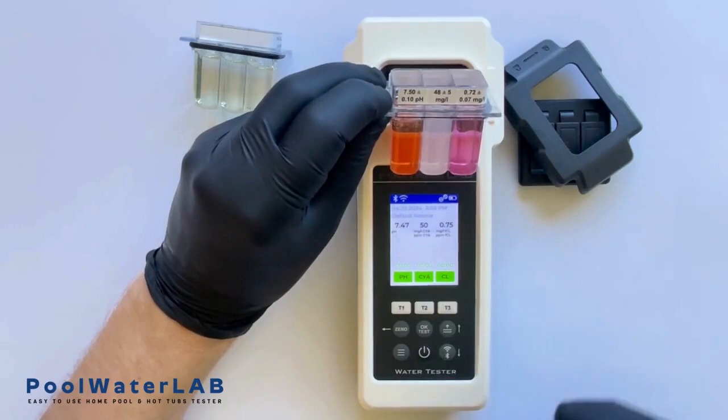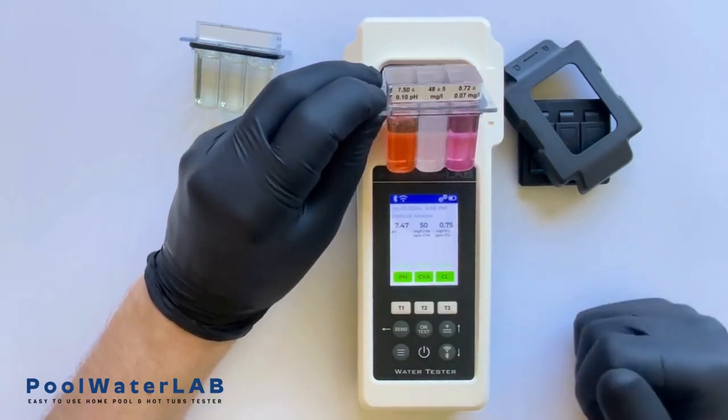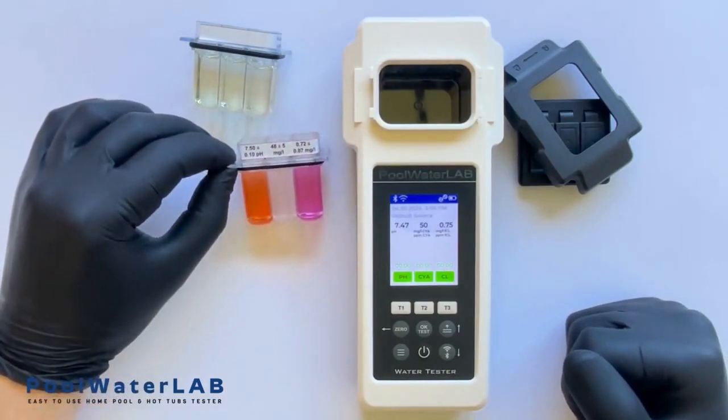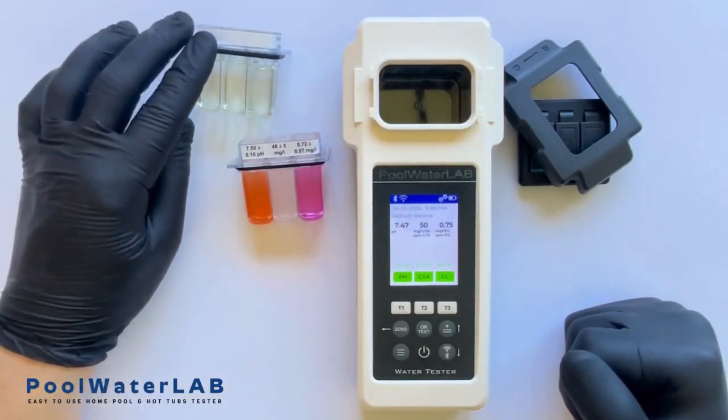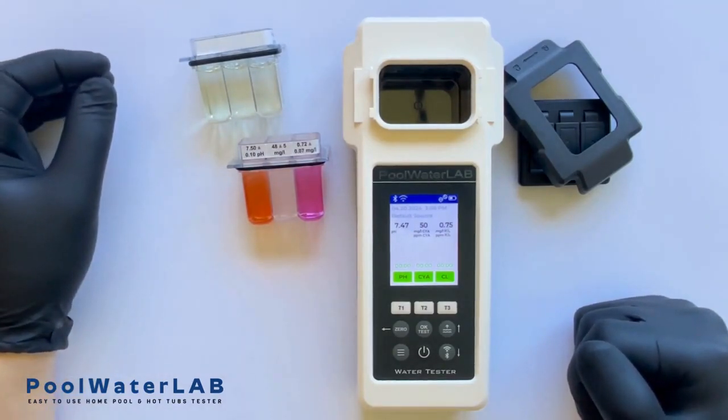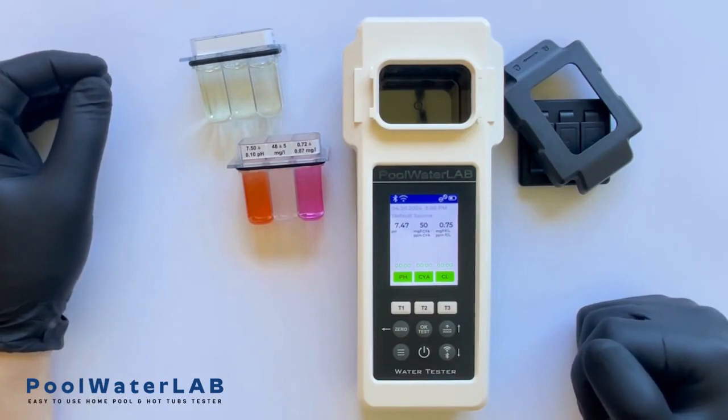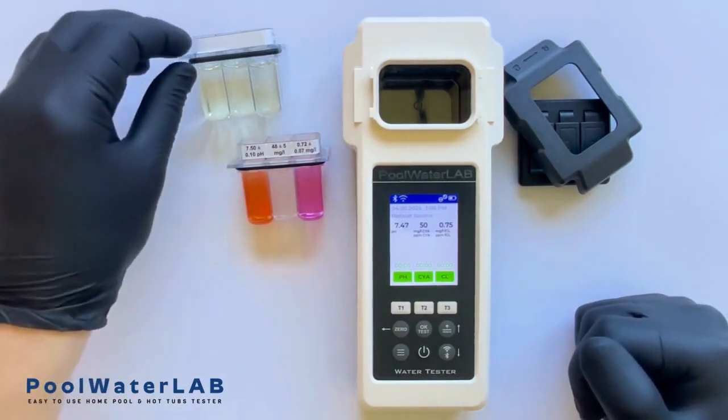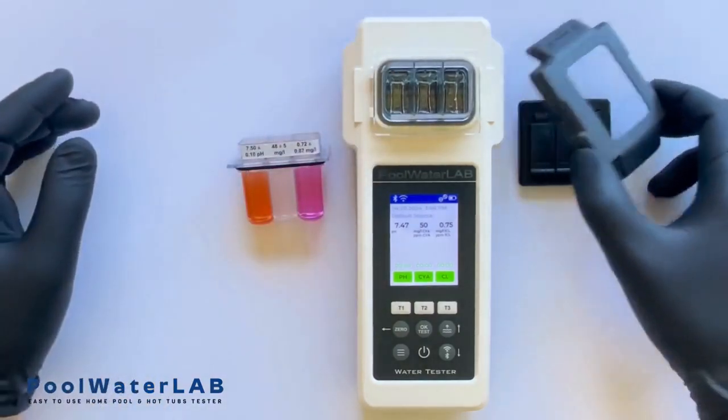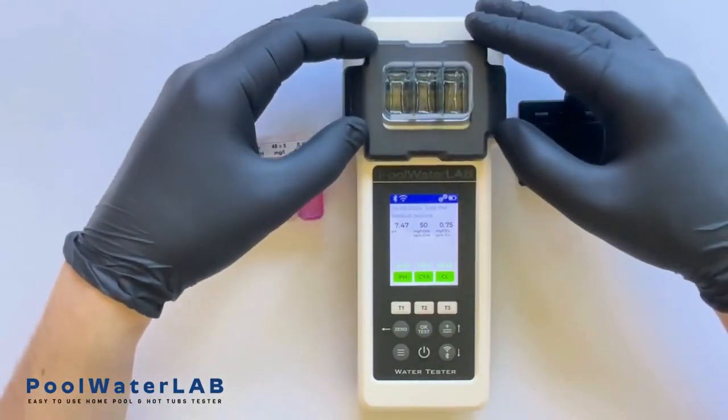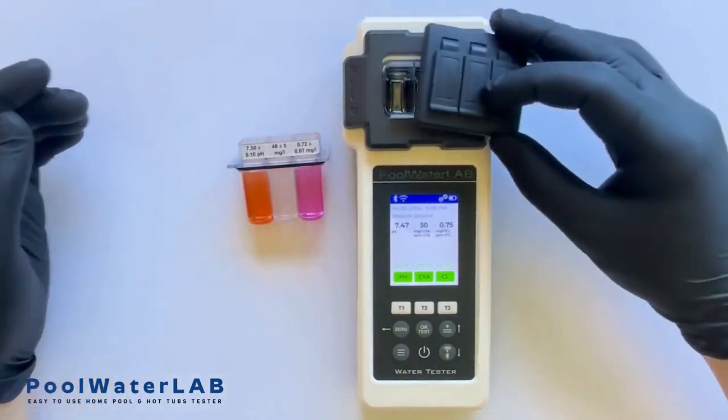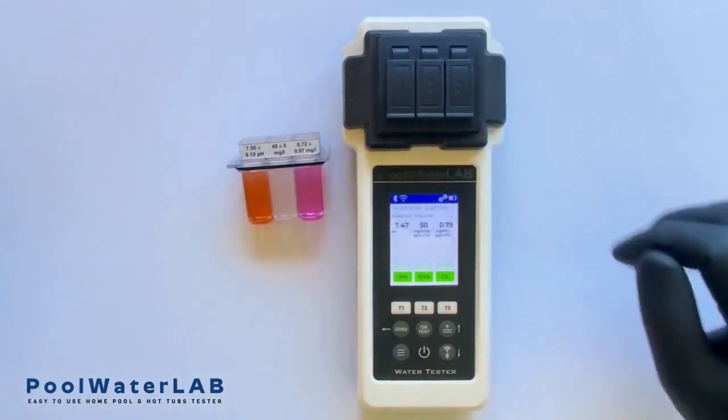Therefore, we can conclude that the pool water lab tester fully complies with the L1 accuracy level, which is the generally accepted standard for water measuring devices in the USA. The L1 standard is a rigorous benchmark that ensures devices can deliver consistent and reliable results under a variety of testing conditions. It requires devices to demonstrate a high level of precision, with only minimal acceptable deviations from the established norms, thus ensuring both reliability and accuracy for critical water quality assessments.